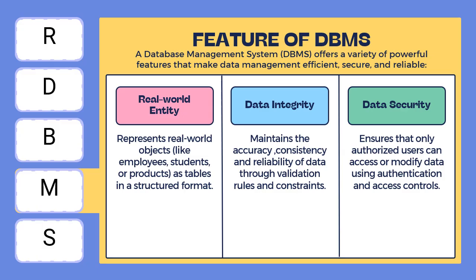The second feature is data integrity — it maintains the accuracy, consistency and reliability of data through validation rules and constraints. Constraints include primary key, foreign key, unique or not null. Rules and triggers are also used to maintain correct and consistent data.